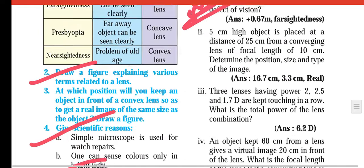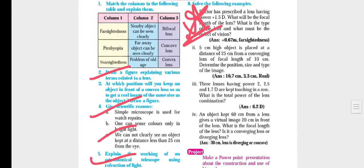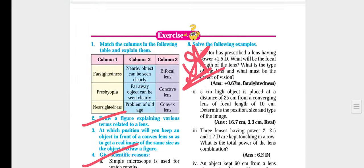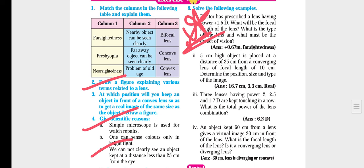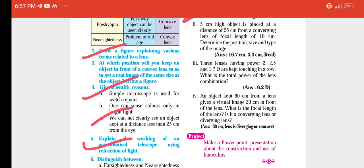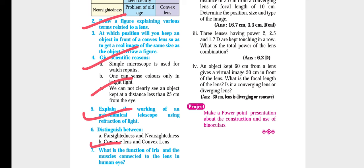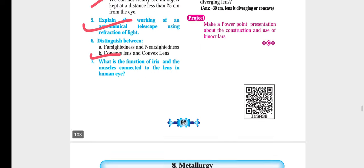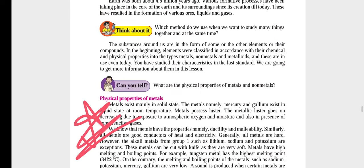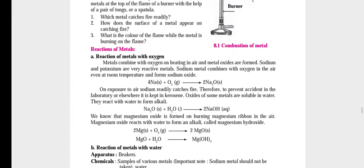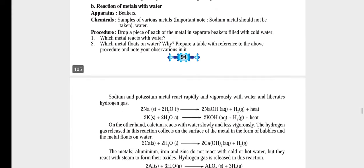Coming to the exercise part of chapter 7 on page number 91: question number 2, question number 4 give reason, question number 5, question number 7, and question number 8 — all of these are the important questions.